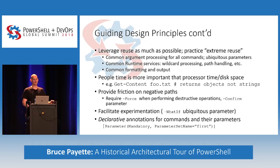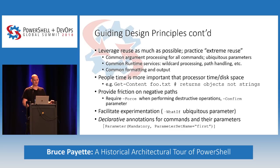We wanted to provide friction on negative paths. To use a probably incorrect analogy: we'll let you shoot yourself in the foot, but we won't hold the gun. So we have dash-force on destructive operations, and the whole dash-confirm mechanism to confirm operations that are going to make significant changes to your system. In general, we wanted aspects of the system that let you do something but didn't make it easy if it was probably the wrong thing to do.